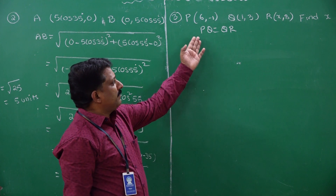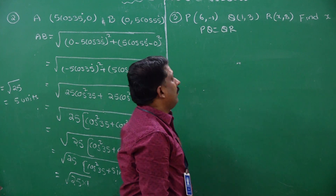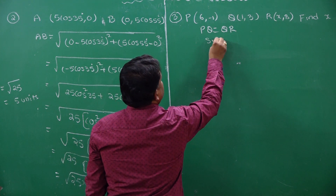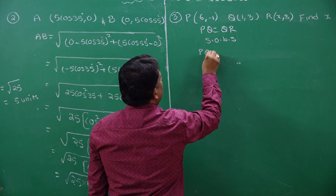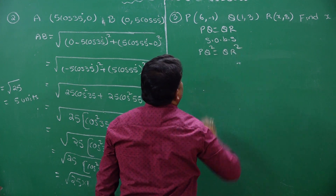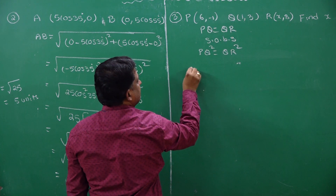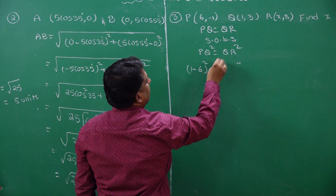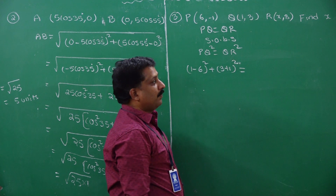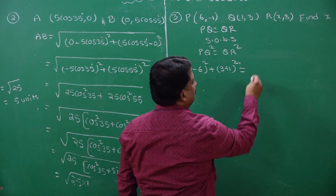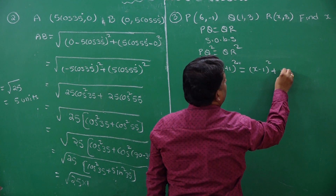Squaring on both sides, PQ squared is equal to QR squared. So I write: (1 minus 6) all square plus (3 minus minus 1) all square, which is (3 plus 1) all square, is equal to (x minus 1) all square plus (8 minus 3) all square.